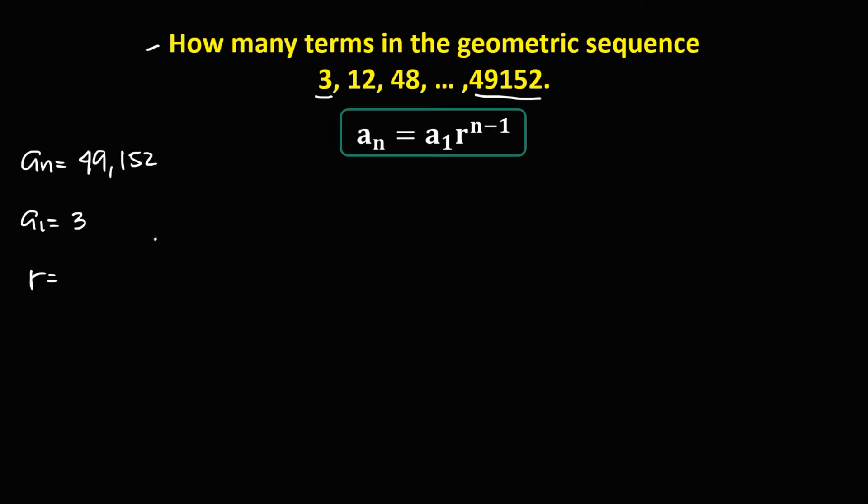Then r is the common ratio. We can find r using a sub 2 over a sub 1. And a sub 2 is the second term, that's positive 12, then over a sub 1 is positive 3. So the common ratio is positive 4.